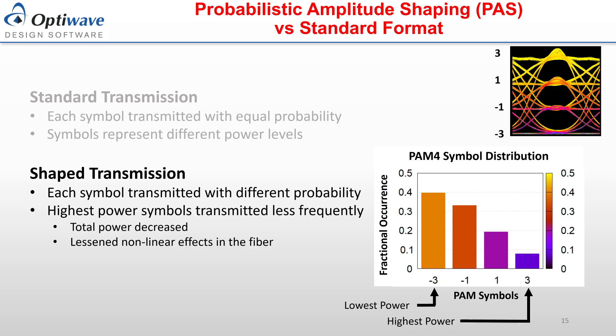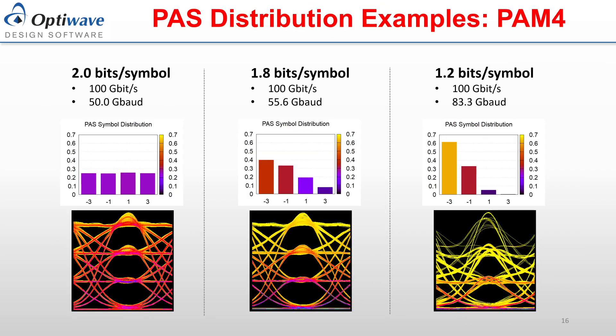In this manner, probabilistic amplitude shaping allows for a decrease in the overall power of the system, in addition to lessened non-linear effects within the fibre. Three different shaping rates are displayed: on the left, no shaping is used and each symbol is transmitted with a uniform probability; the centre displays a shaping rate at 1.8 bits per symbol where lower-powered symbols are transmitted more frequently; and the right displays a strong shaping of 1.2 bits per symbol where the highest power symbols are transmitted infrequently. Demonstrations of this will be available in the breakout room following this presentation.